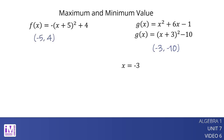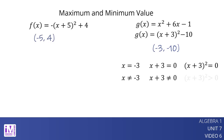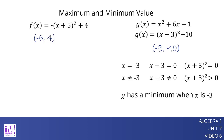When x equals negative 3, x plus 3 equals 0, so the quantity x plus 3 squared is 0. When x is not negative 3, then x plus 3 is a non-zero number. Since a squared number cannot have a value less than 0, the function has its smallest value when x is negative 3. This means g has a minimum when x is negative 3.